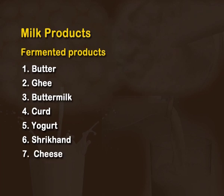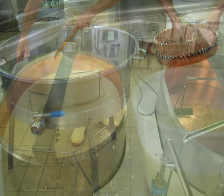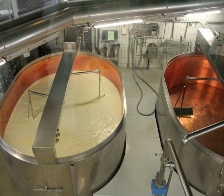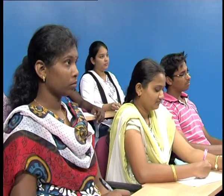Cheese is popular worldwide and is made up of only casein. Varieties of cheese are differentiated according to their flavor, texture, the type of milk, salts, seasonings added, and the type of bacteria, yeast and molds utilized for ripening the cheese. This concludes the section on fermented milk products.